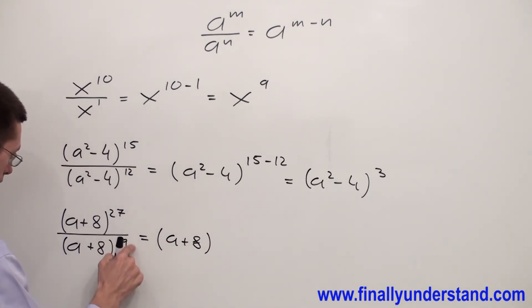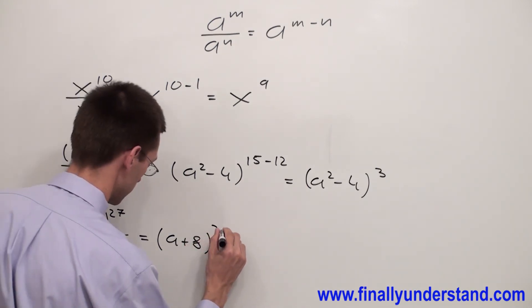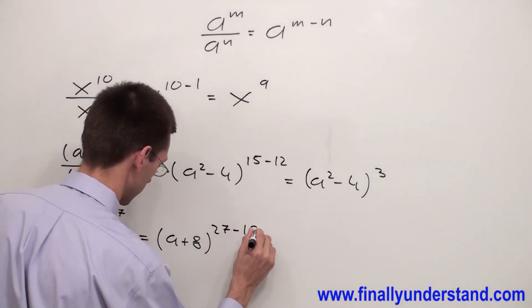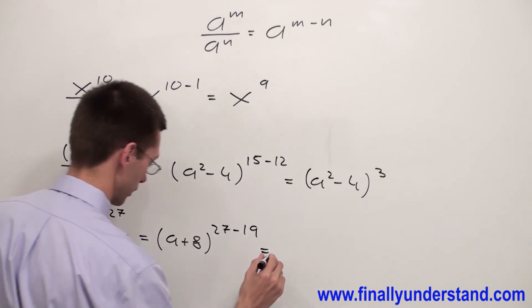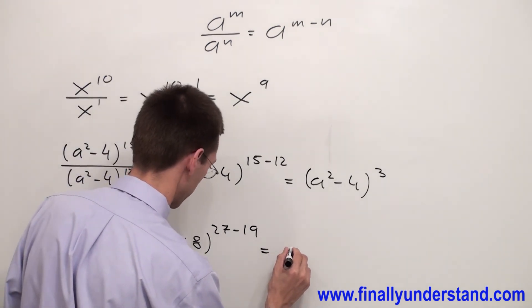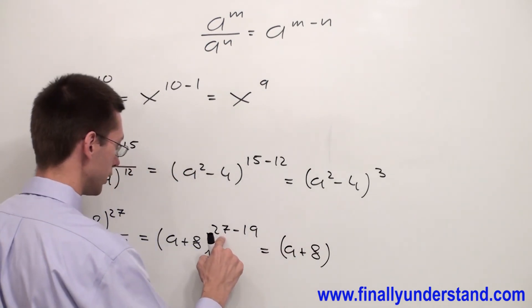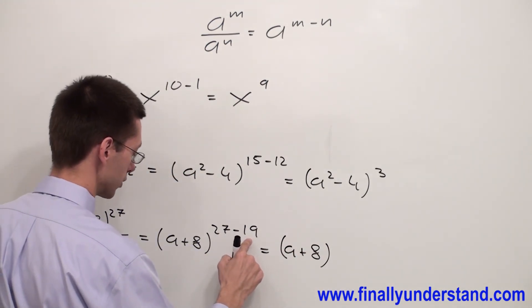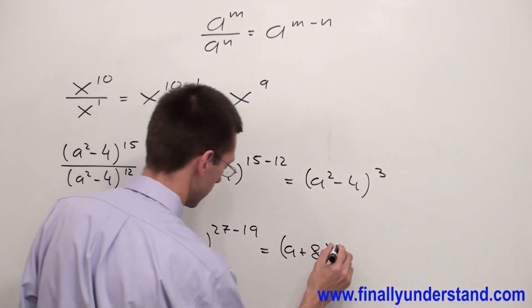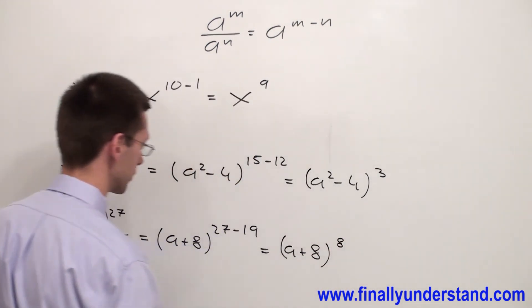Next, I subtract the exponents: 27 minus 19. So my final solution is (a + 8)^8, since 27 minus 19 is 8. This is my answer.